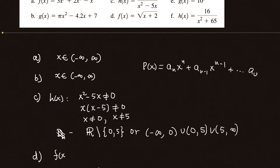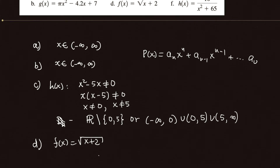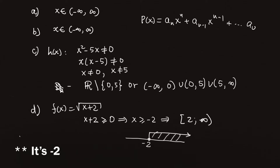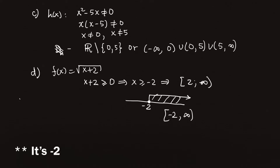For Part D, we have a radical function. This function is continuous on every point in its domain, same as Part C. For this function to exist, x plus 2 has to be greater than or equal to 0 because the square root of a negative number does not exist. So x ≥ −2, meaning it is continuous on the interval [−2, ∞). On the number line, −2 is included and all numbers greater than −2.